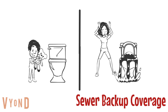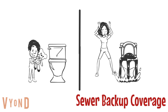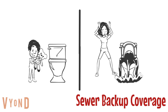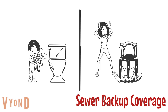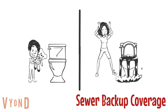Another important endorsement is water backup. When living in a townhome or condo, you will typically share sewer lines with other unit owners. That being said, you have no control over what other unit owners are flushing down their toilets. If there's a sewer water backup, this optional coverage will provide coverage to clean up, replace, and or repair your personal property.